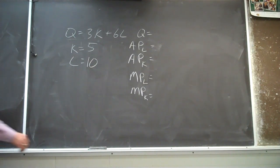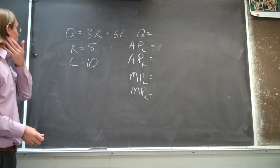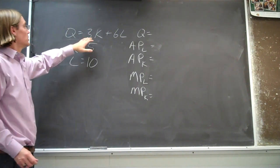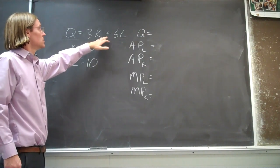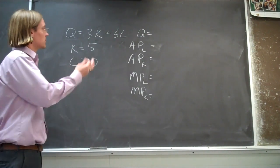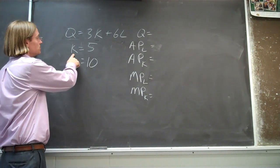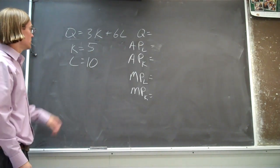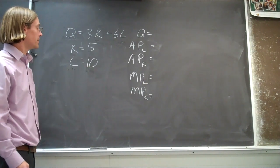We have a fairly straightforward production function where the quantity produced, Q, is equal to three times the capital plus six times the amount of labor we use — so a linear production function. We're given that capital is equal to five, so we're going to use five units of capital, and labor is equal to ten, so we're using ten units of labor.